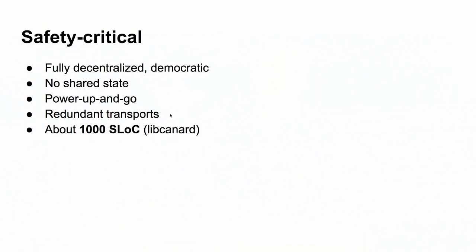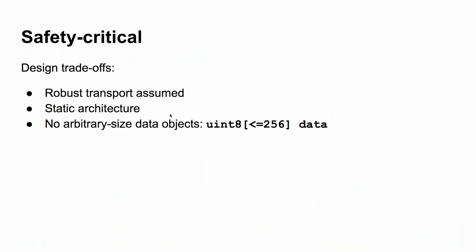We found a pretty satisfactory solution that allowed us to implement redundancy support easily. Last but not least, it is simple in terms of implementation. There exists a reference implementation called libcanard — it is MIT-licensed and contains approximately 1,000 source lines of code, so pretty compact. It's on GitHub and links will be provided at the end of this presentation. To achieve this level of simplicity and ease of validation, we had to introduce some design trade-offs.